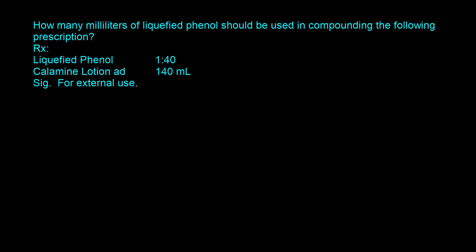This question says how many milliliters of liquefied phenol should be used in compounding the following prescription? So we have a prescription with liquefied phenol 1:40 and then we're making a total preparation of 140 milliliters. So the first thing we want to do is start off with the ratio strength which is 1:40. That will actually mean that you have 1 milliliter of liquefied phenol in 40 milliliters of preparation.